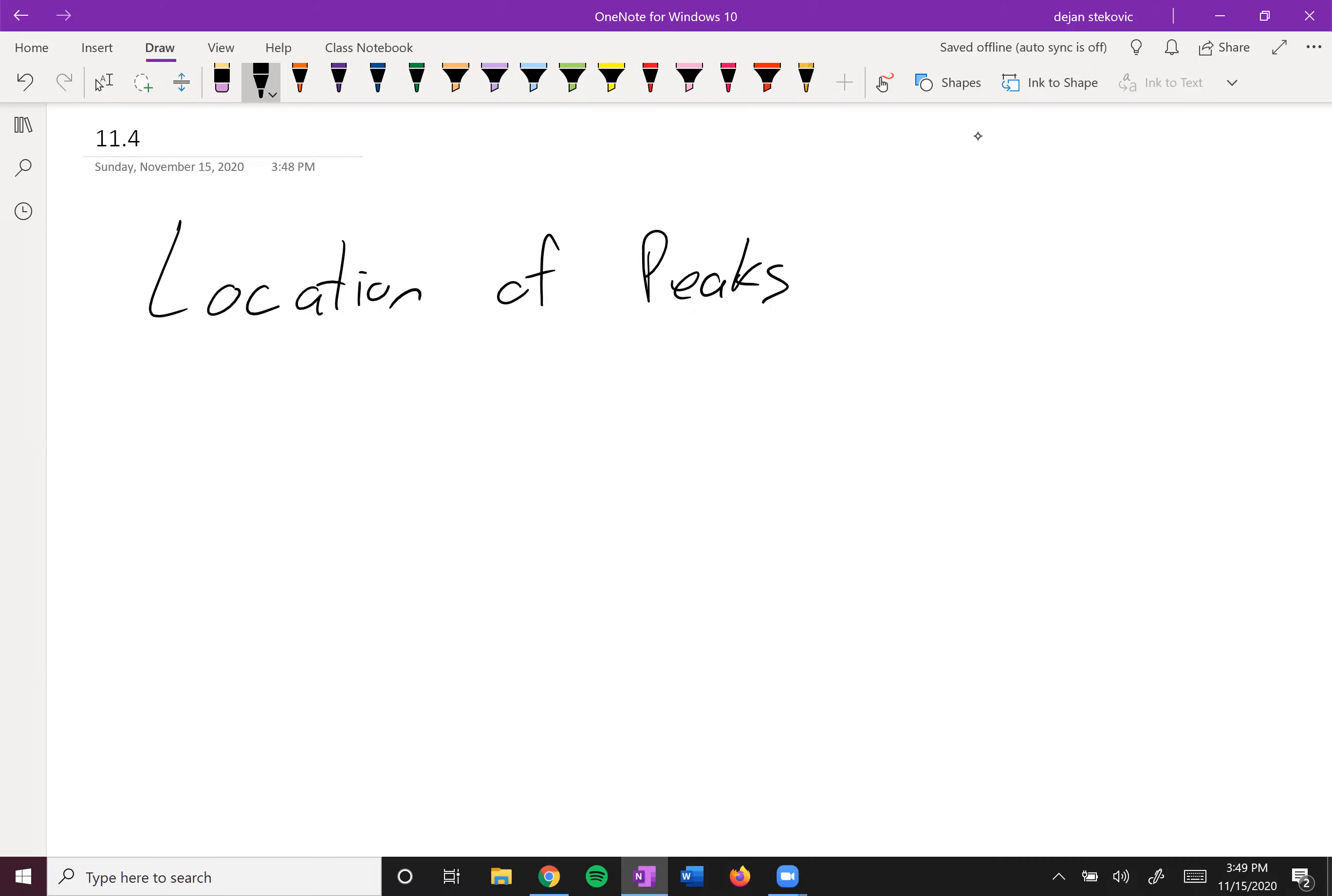All right, so the first piece of information we can pull from our NMR is the location of our peaks. We call this the chemical shift.